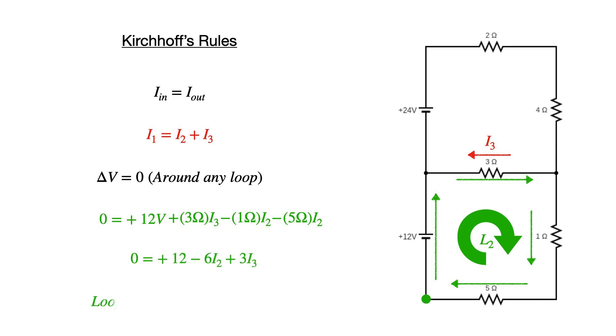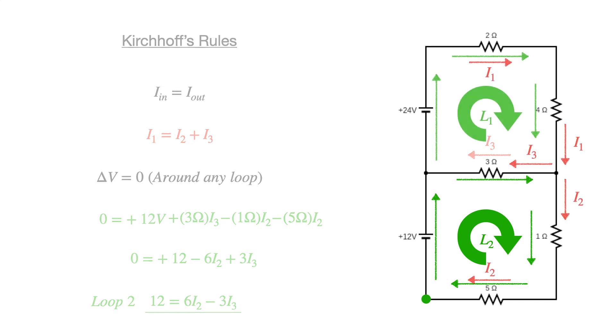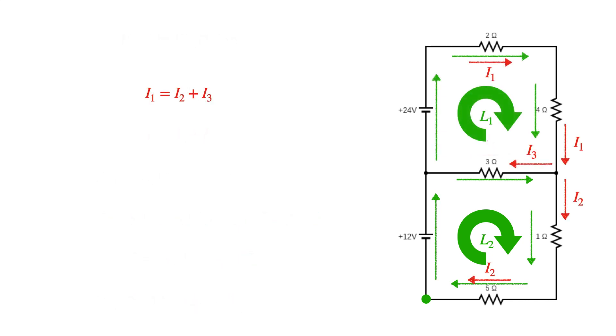Collecting terms and simplifying, I get loop two has a 12 volt change, which is equal to some function of I2 minus I3. So if I review my three statements of Kirchhoff's rules, I have current one equals current two plus current three.